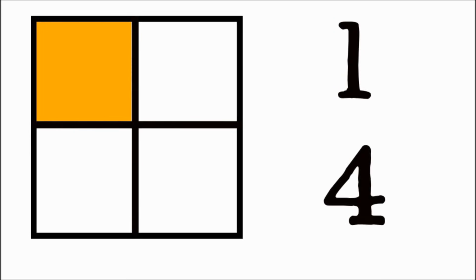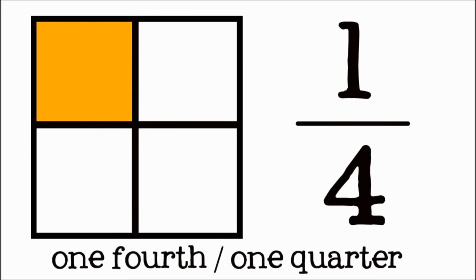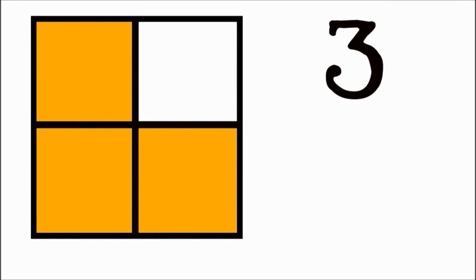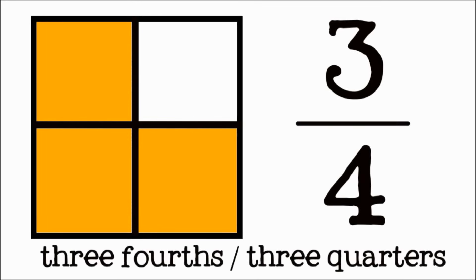One piece, out of four total pieces, is one fourth, or one quarter. Three pieces, out of four total pieces, is three fourths, or three quarters.